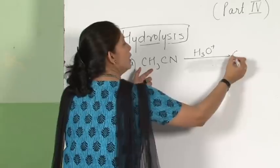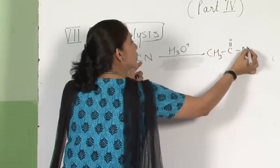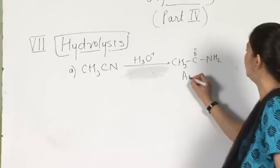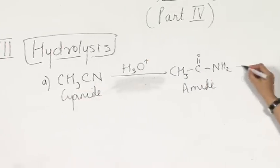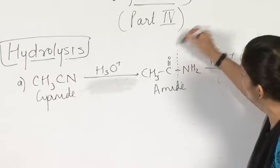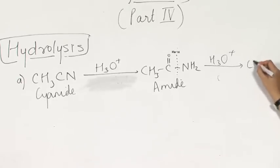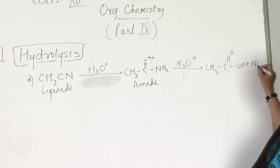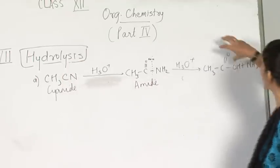Any cyanide undergoes hydrolysis to give rise to an amide. CH3CN — to the carbon the oxygen comes and to the nitrogen hydrogen comes, using H2O, giving an amide. The amide on further hydrolysis undergoes cleavage of the C-N bond, giving CH3COOH (carboxylic acid) and ammonia as a byproduct. Wherever the cyanide group is, that position turns into a carboxylic acid.